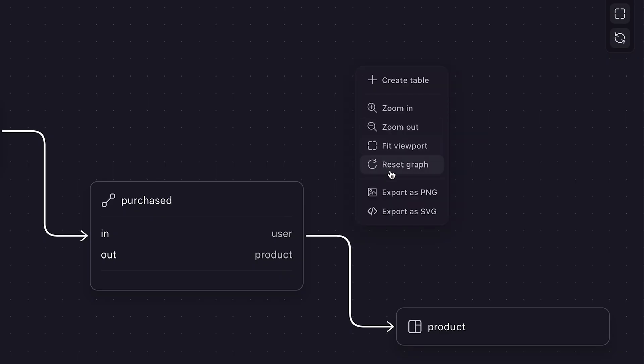To do this, simply right-click anywhere on the canvas and press export as PNG or export as SVG. And that's it. As you can see, designing your schema using the designer view can be a really easy way to get a visual overview of your database schema. For more videos and tutorials on Surrealist, you can head to our Surrealist playlist here on YouTube. And if you found this video useful, don't forget to subscribe for similar content. Thanks for watching.